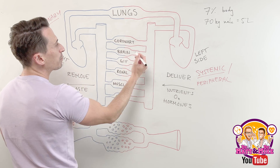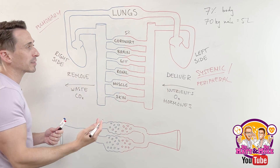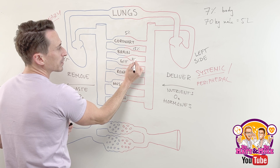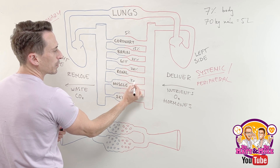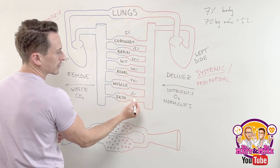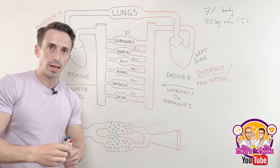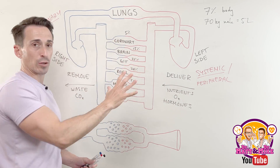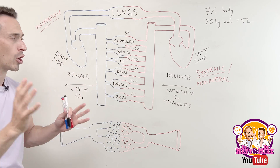Of this five liters, five percent goes to the coronary arteries to feed the heart itself, 15 percent goes to the brain, 25 percent goes to our gut, 20 percent goes to the kidneys, 20 percent goes to the muscles, and five percent goes to our skin. The remaining 10 percent goes to other tissues of the body. Now, as we leave the heart, I want to look at the different vessels that are involved — there's a whole range of different vessels that we need to go through.